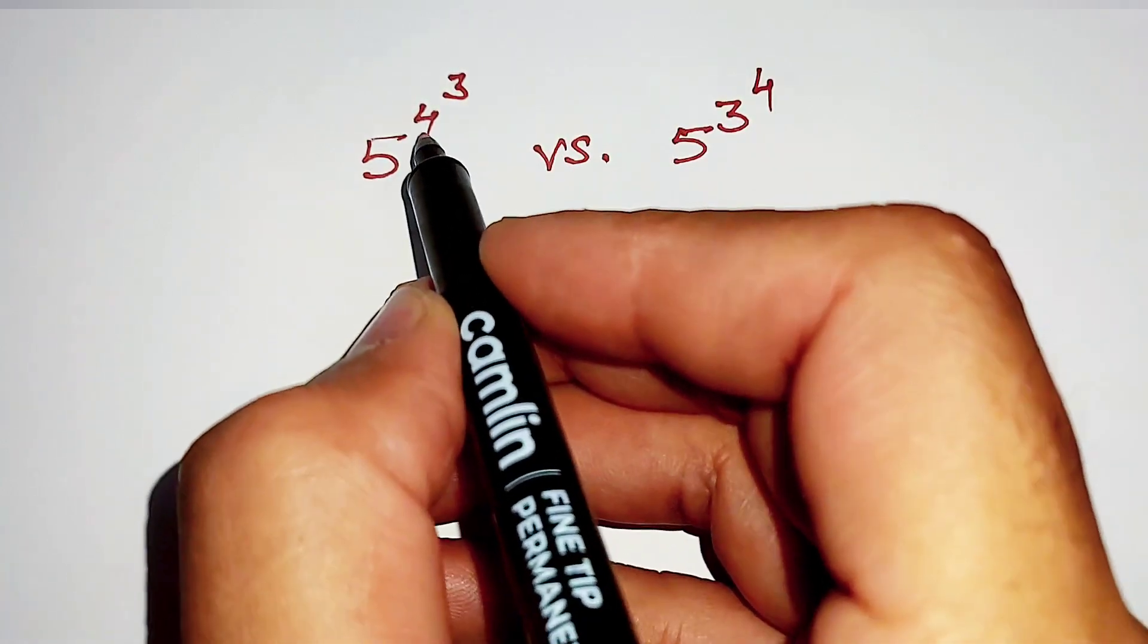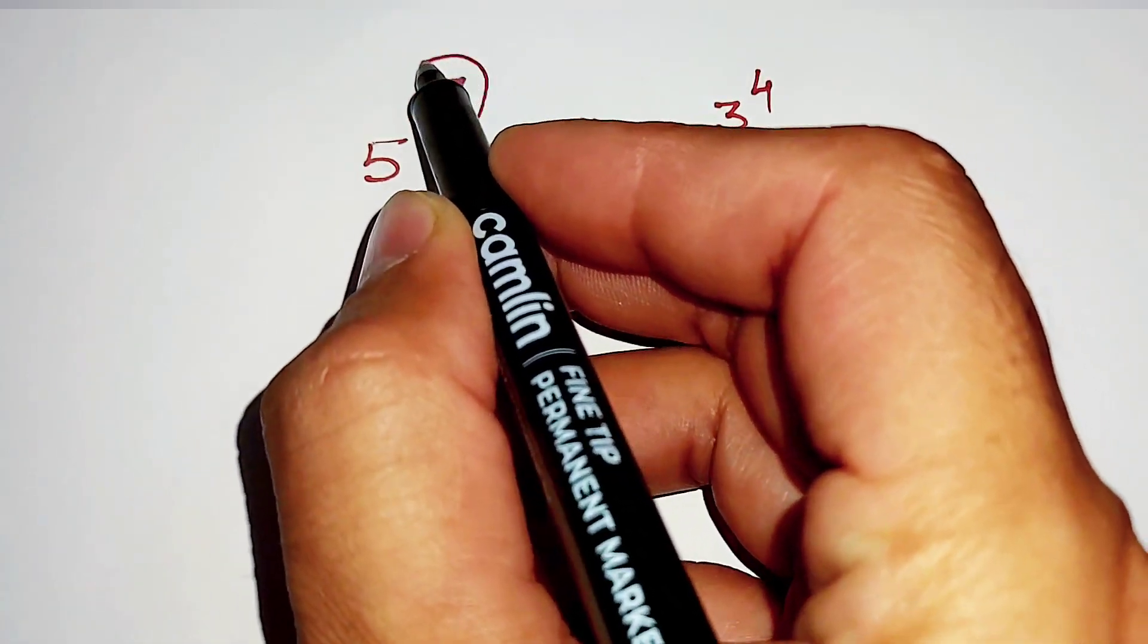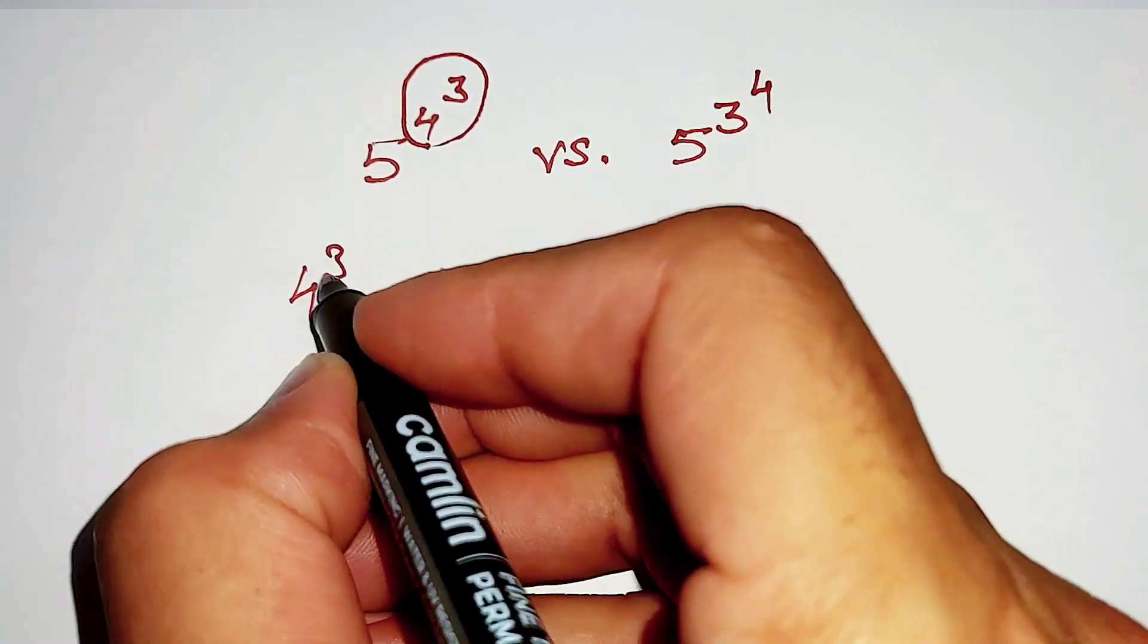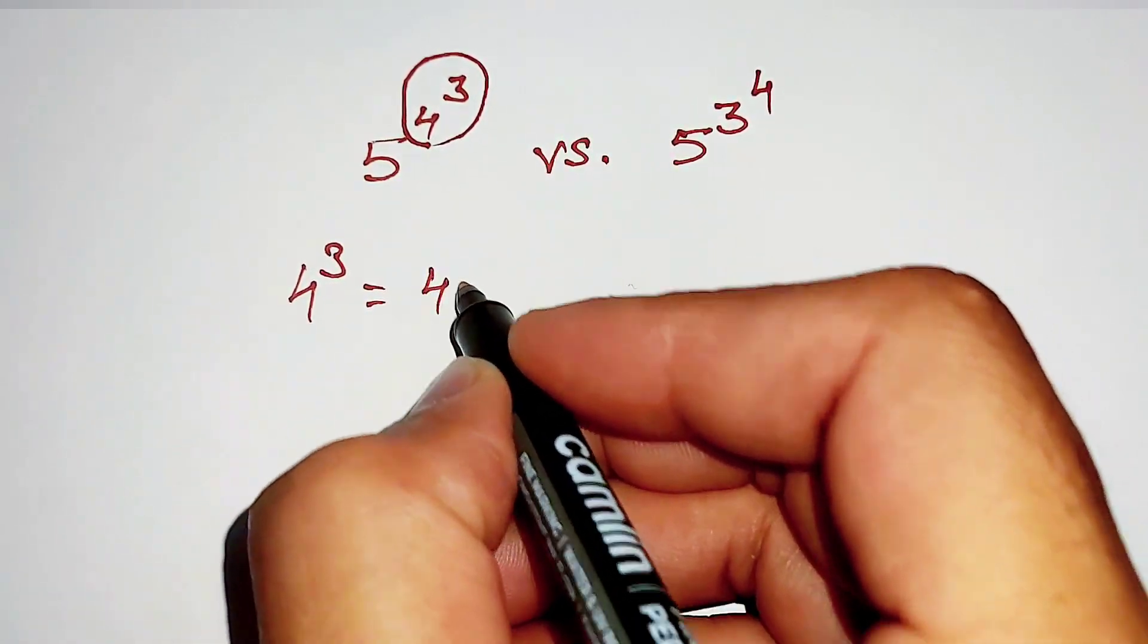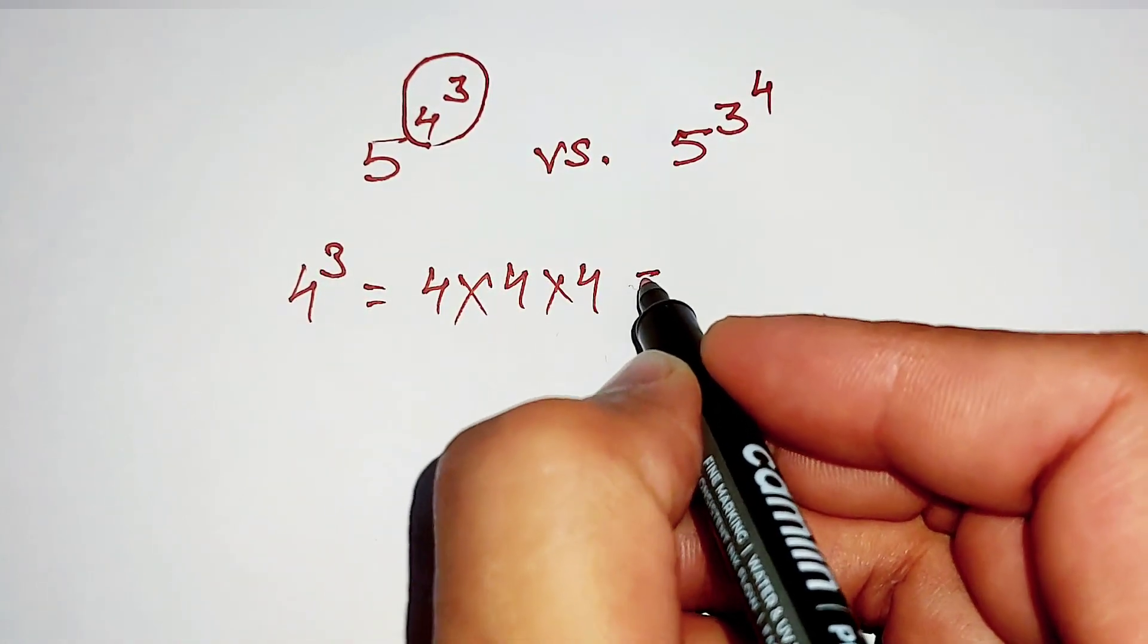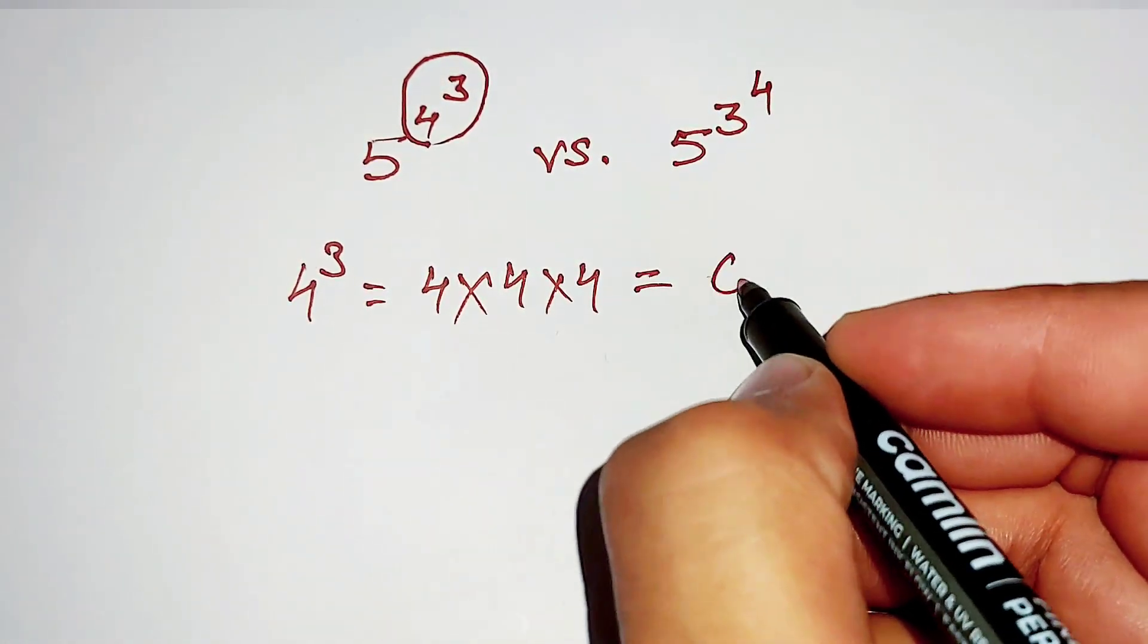First of all we will solve this part of this expression first. Here 4 power 3 is equal to 4 multiply 4 multiply 4, which is equal to 64.